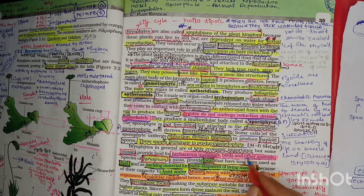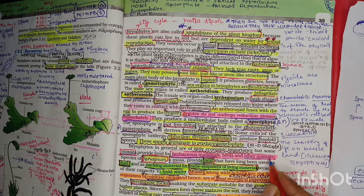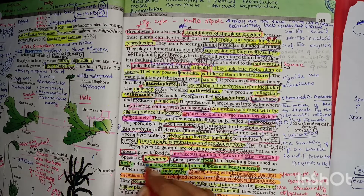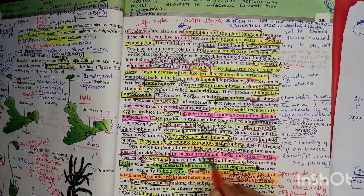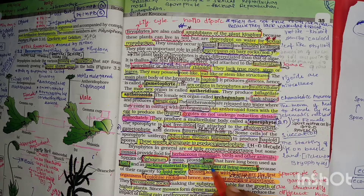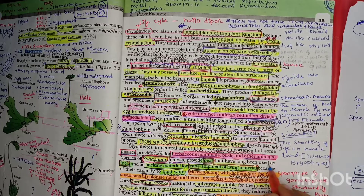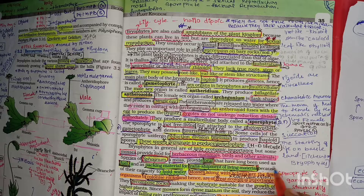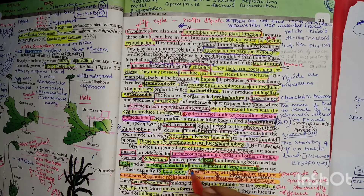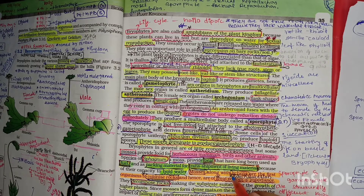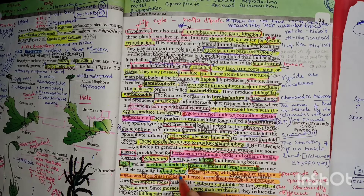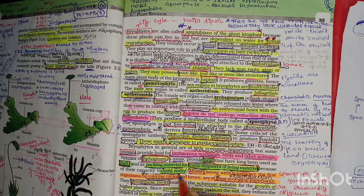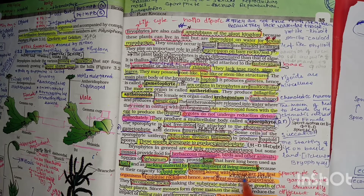Species of Sphagnum provide peat. Sphagnum has long been used as fuel and as packaging material for transporting living material because of its capacity to hold water - a property known as hydrocolloid. Mosses along with lichens are the first organisms to colonize rocks.